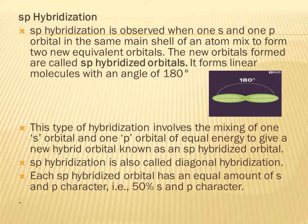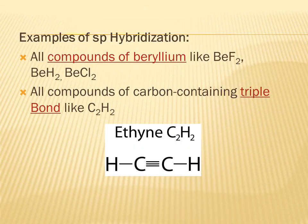sp hybridization is also called diagonal hybridization. Each sp hybridized orbital has an equal amount of s and p character — 50 percent s character and 50 percent p character. Examples of sp hybridization include all compounds of beryllium like BeF2, BeH2, and BeCl2, and all compounds of carbon containing triple bonds like C2H2.